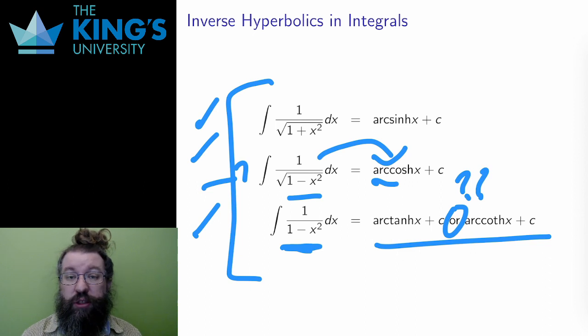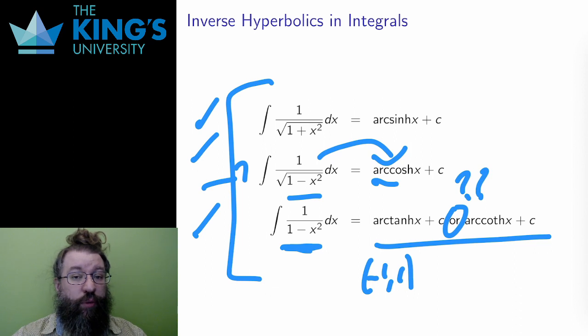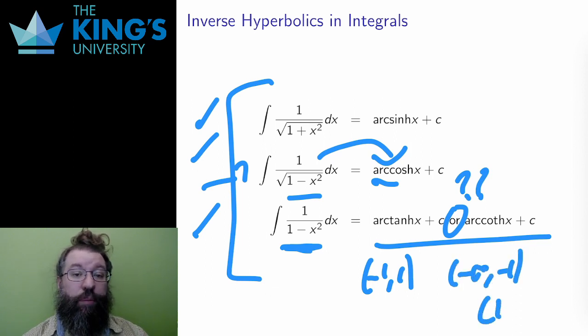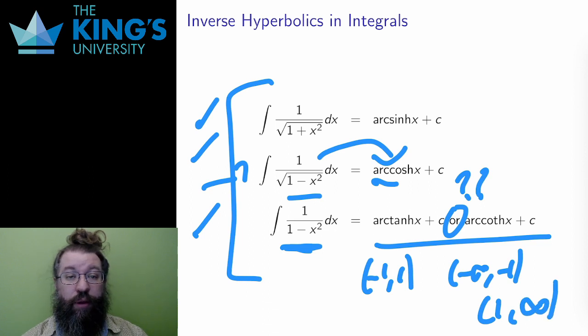Well, the answer is in the domain. Inverse hyperbolic tangent is only defined between negative 1 and 1, and inverse hyperbolic cotangent is only defined below negative 1 and above 1. These have disjoint domains. So together they form the full antiderivative of 1 over 1 minus x squared.